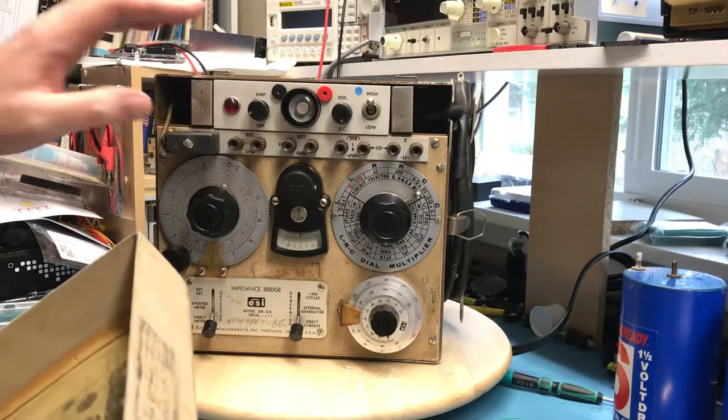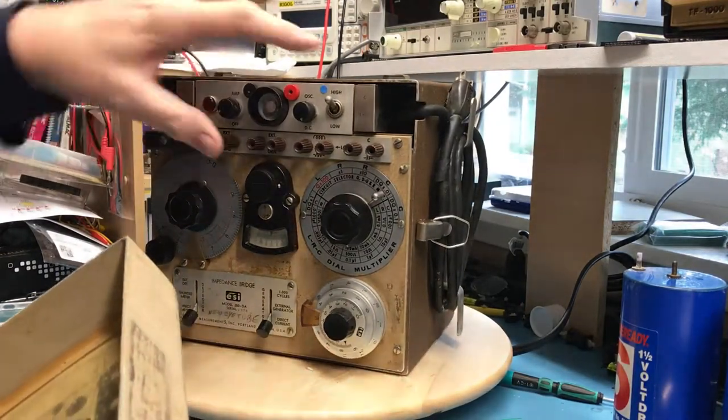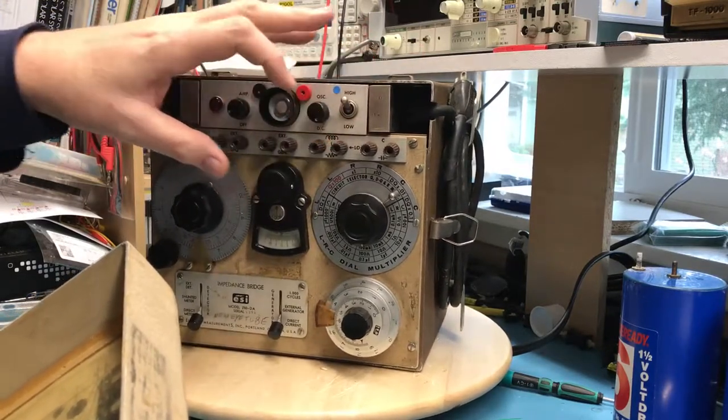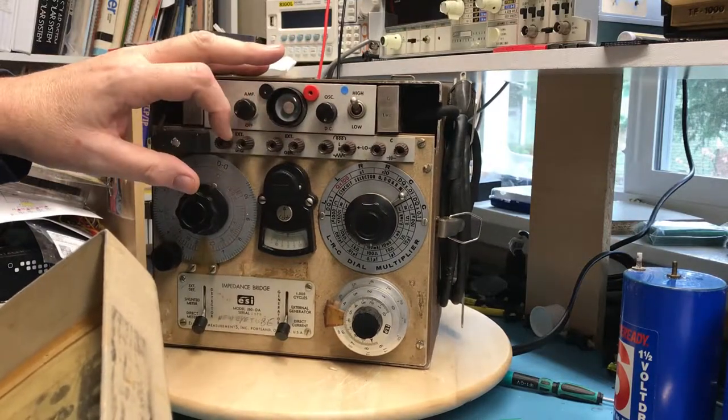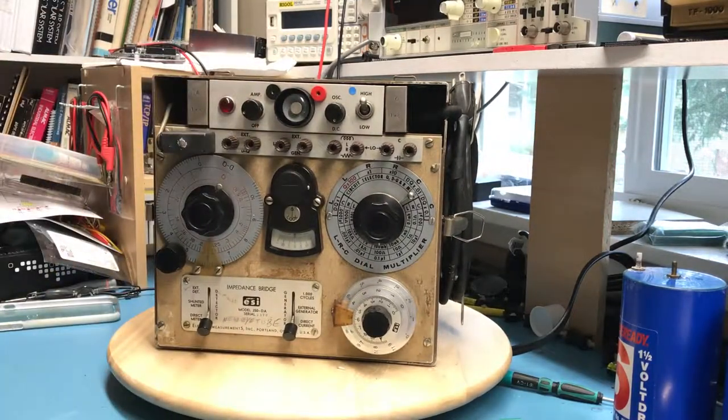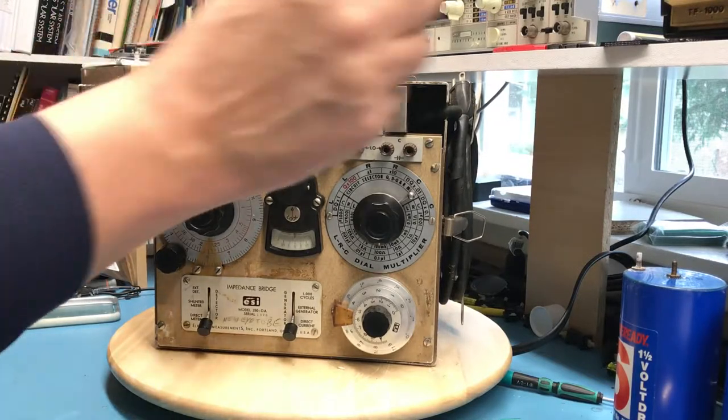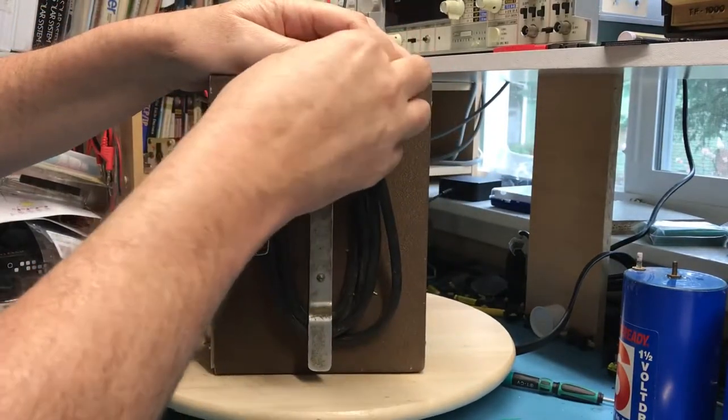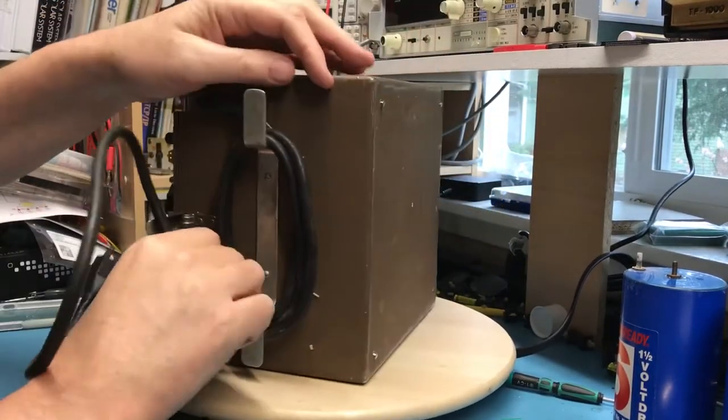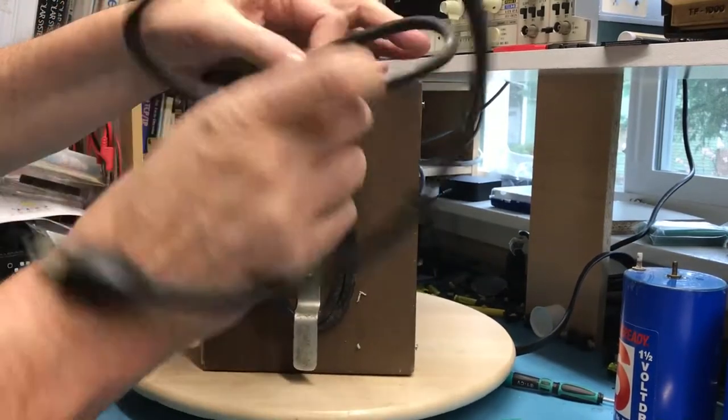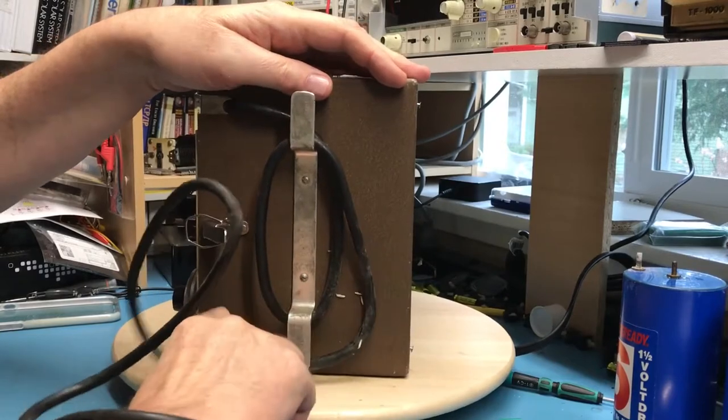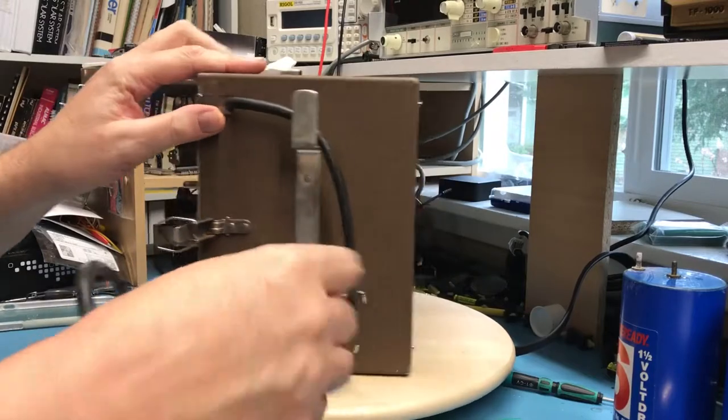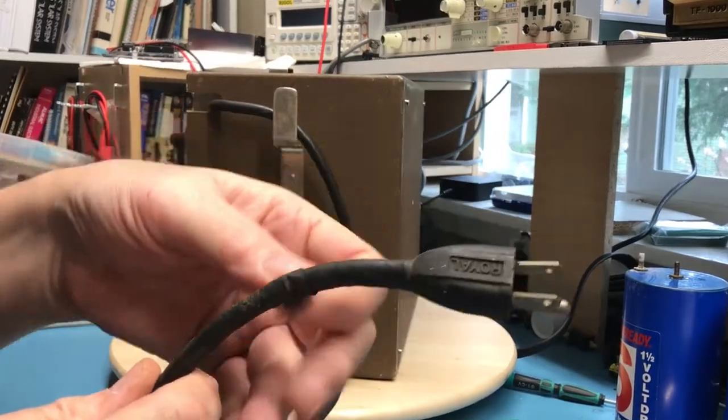Connect unknown to R terminals. But as always, I'm going to go ahead and open it up and take a peek inside before I even attempt to apply power to it. This power cord has seen better days, the rubber is very brittle. Yeah, this power cord's in really poor shape, there's electrical tape here.